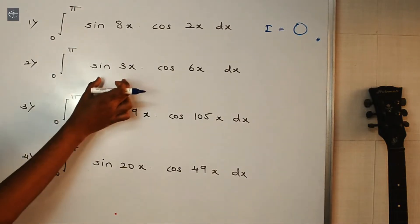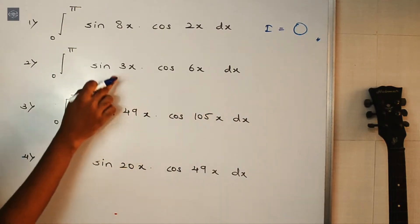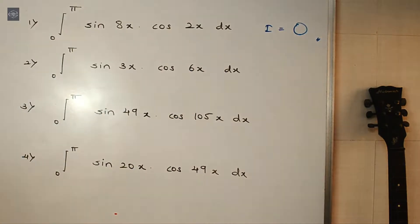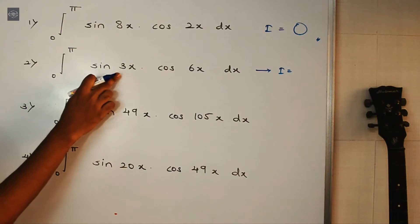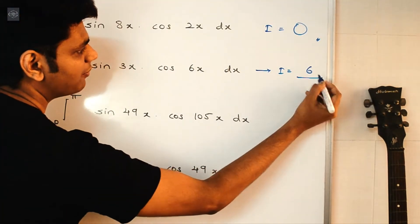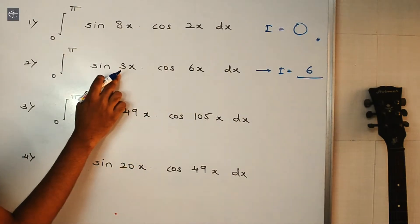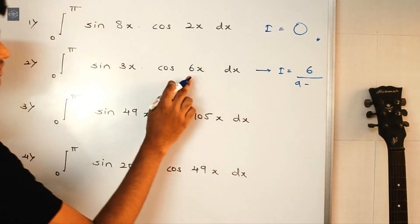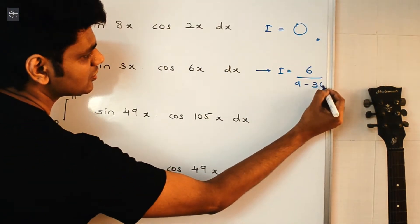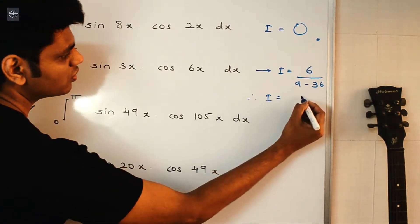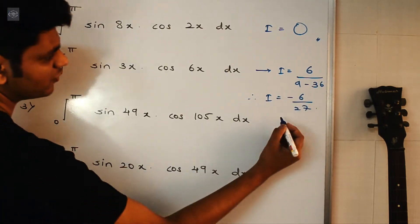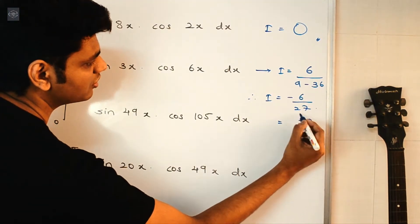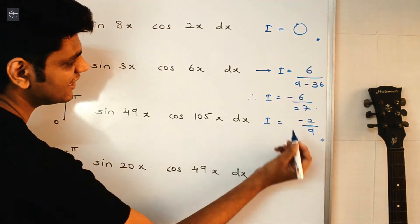Then for the next one, so here we have sin 3x into cos 6x. So here, 3-6, it is minus 3. Minus 3 means it is an odd number. So here, the answer of this integral will be i is equal to 2 times a, 2 times 3 is 6, upon a square minus b square. So a square, 3 ka square is 9, minus b square, 6 ka square is 36. So therefore, i will be equal to 6 upon 9-36 is minus 27. So this we can reduce further, it will be 3 2s upon 3 9s. So minus 2 by 9 is the final answer.